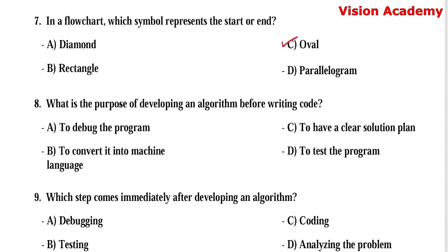Question number 8: What is the purpose of developing an algorithm before writing code? Option A, to debug the program. Option B, to convert it into machine language. Option C, to have a clear solution plan. Option D, to test the program. Here, option C, to have a clear solution plan, is the right answer.